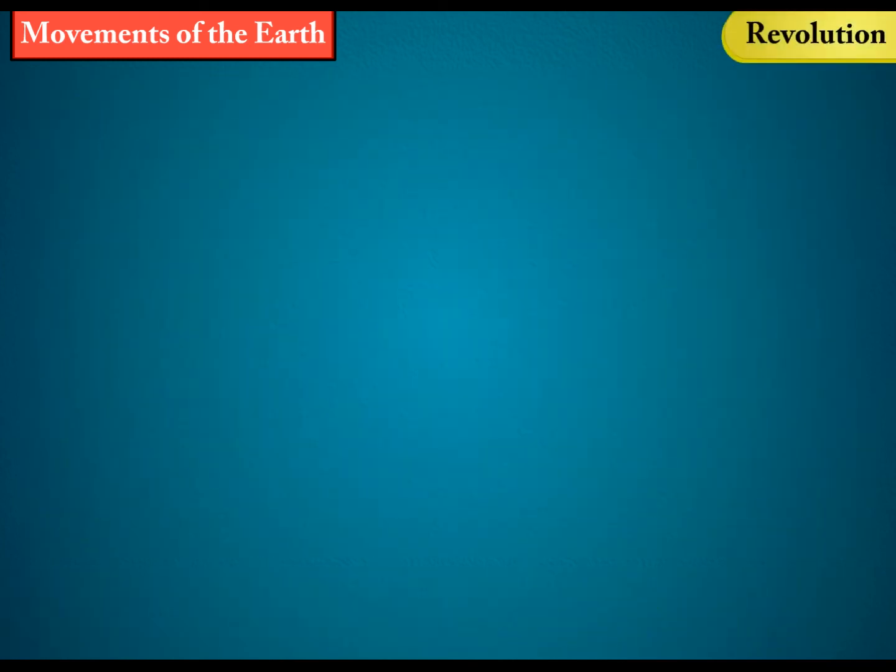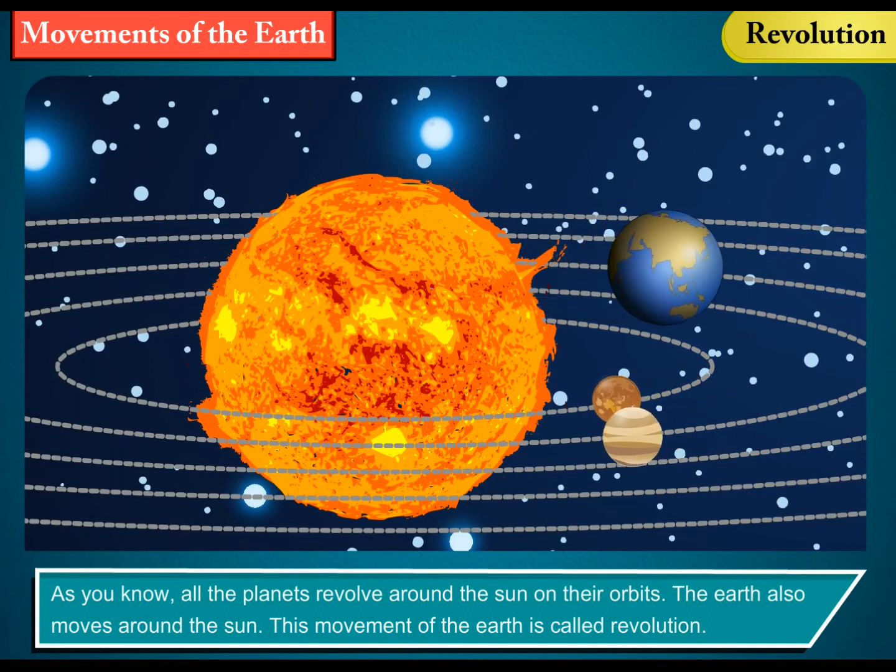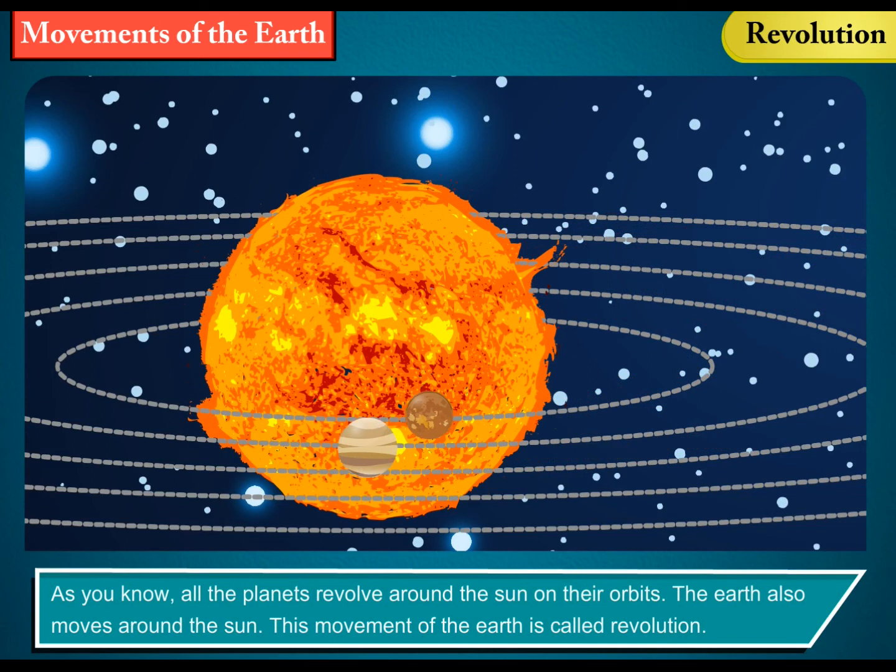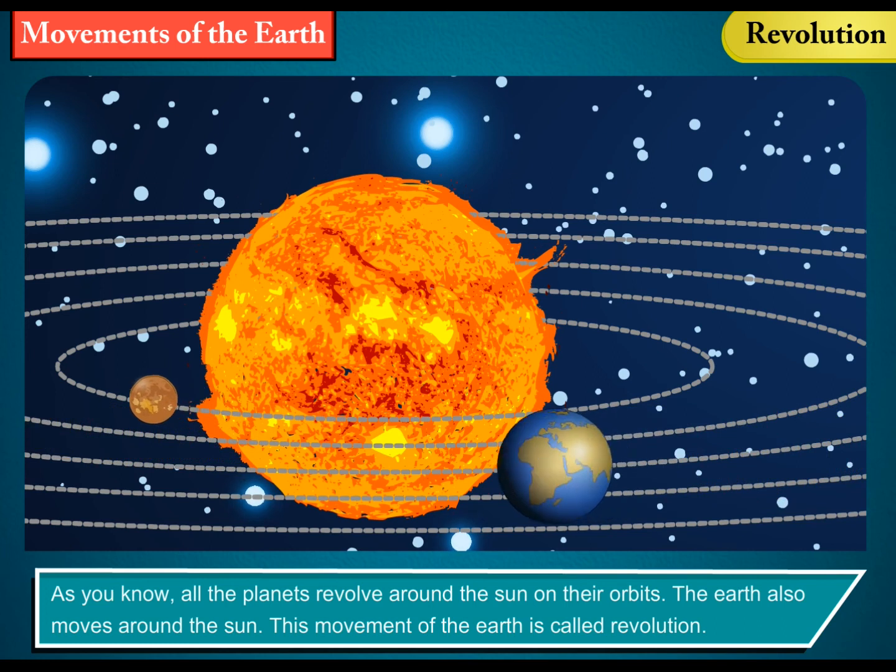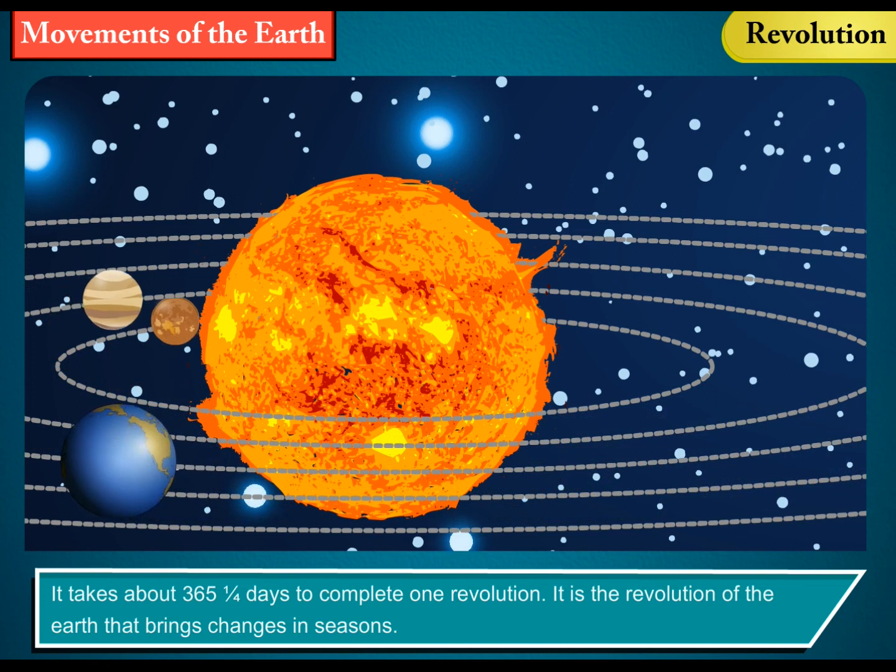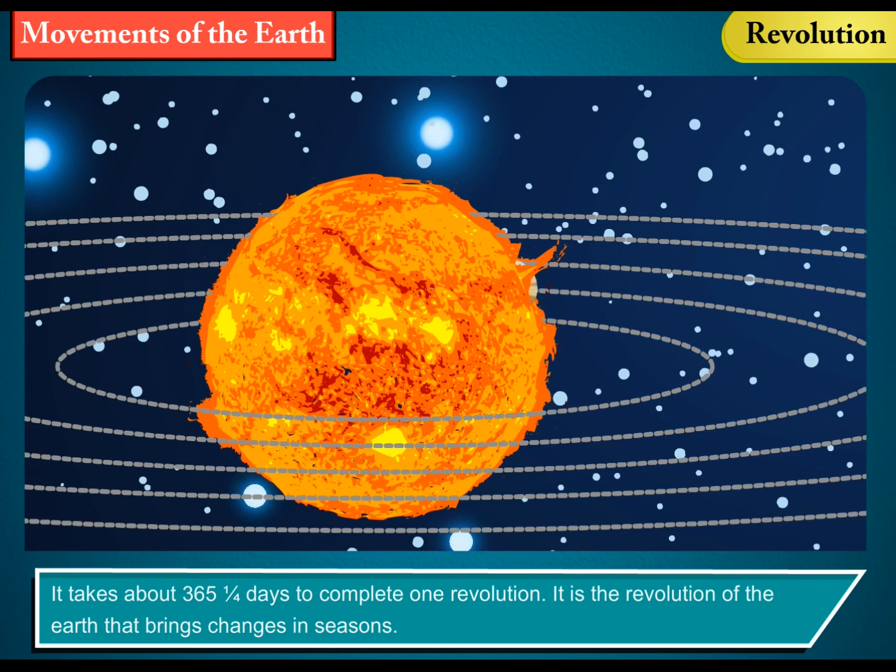Revolution: As you know, all the planets revolve around the Sun on their orbits. The Earth also moves around the Sun. This movement of the Earth is called revolution. It takes about 365 and a quarter days to complete one revolution. It is the revolution of the Earth that brings changes in seasons.